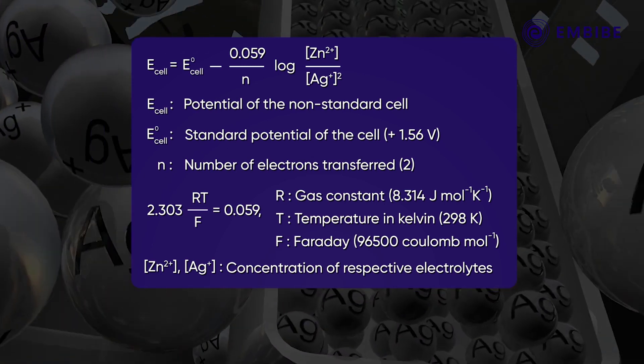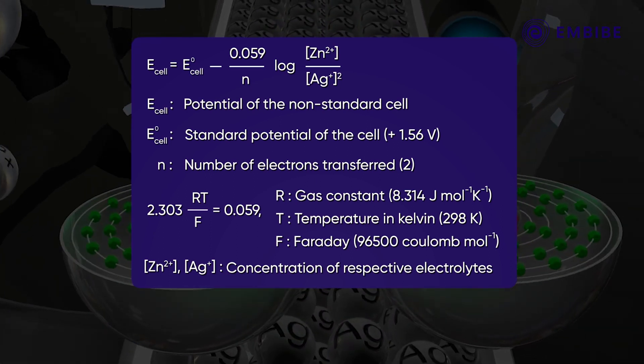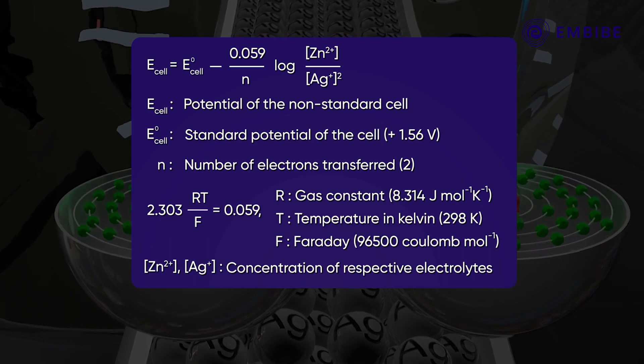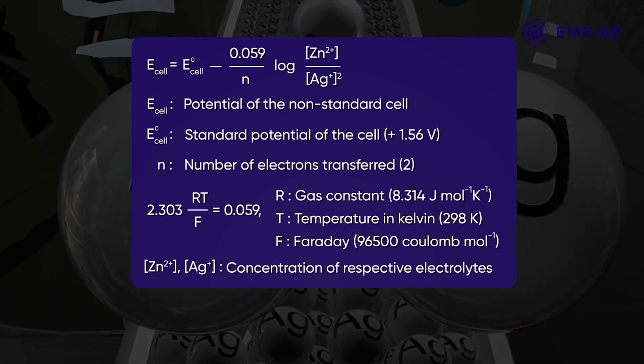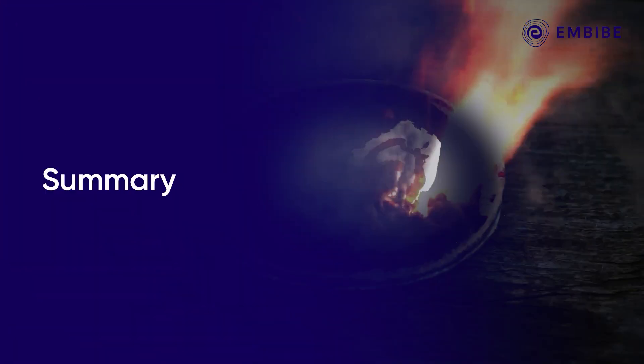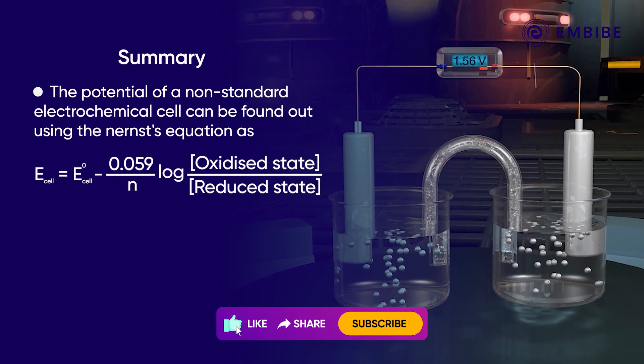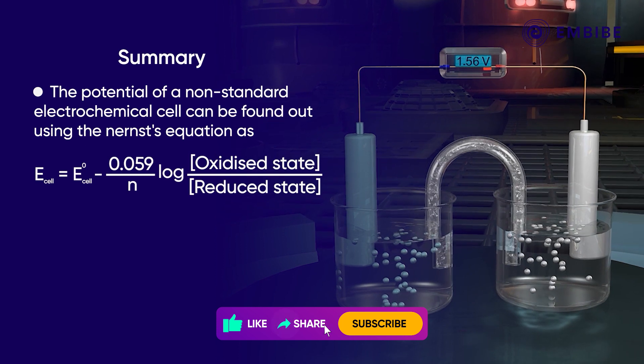The terms [Zn²⁺] and [Ag⁺] in square brackets are the concentrations of the respective electrolytes. Thus, substituting the values of concentrations and the other parameters in the Nernst equation, the cell potential can be worked out.